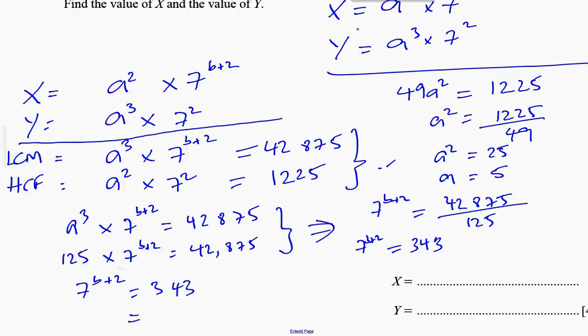So I can write 343 as 7³. Once the bases are the same and they're equal to each other, that means the powers must be the same. So b+2 must equal 3, so b equals 1. We now found what a and b both are. a is 5 and b is equal to 1.